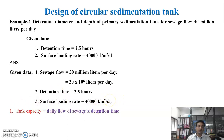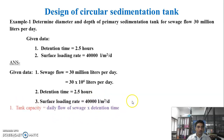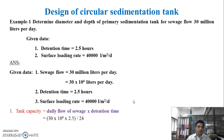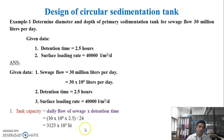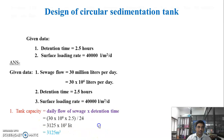First, calculate the tank capacity: tank capacity = daily flow of sewage × detention time = 30 × 10⁶ × (2.5/24) = 3125 × 10³ liters, which is 3125 meter cube (since 1 m³ = 1000 liters). Next, calculate the surface area of the tank: surface area = daily flow / surface loading rate = 30 × 10⁶ / 40,000 = 750 meter square.